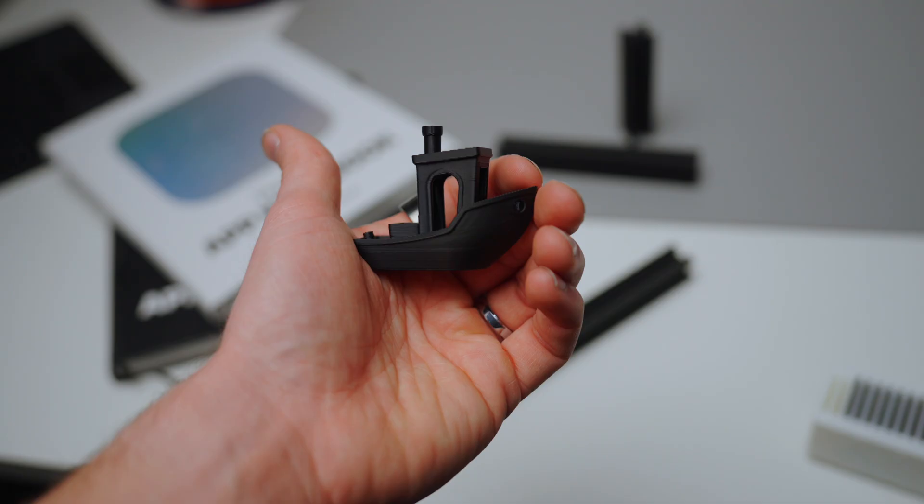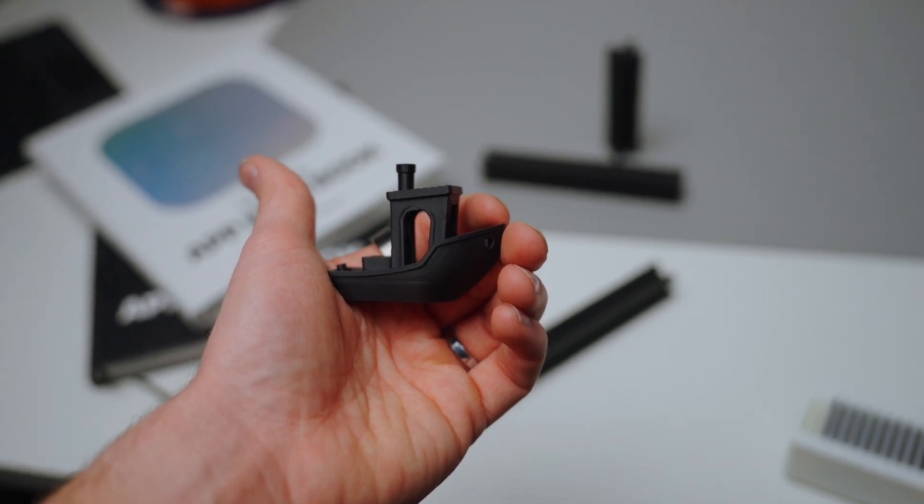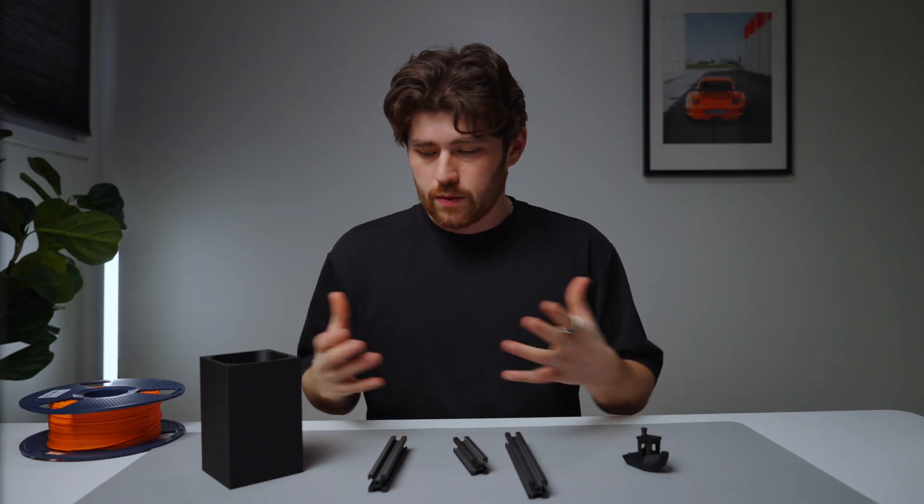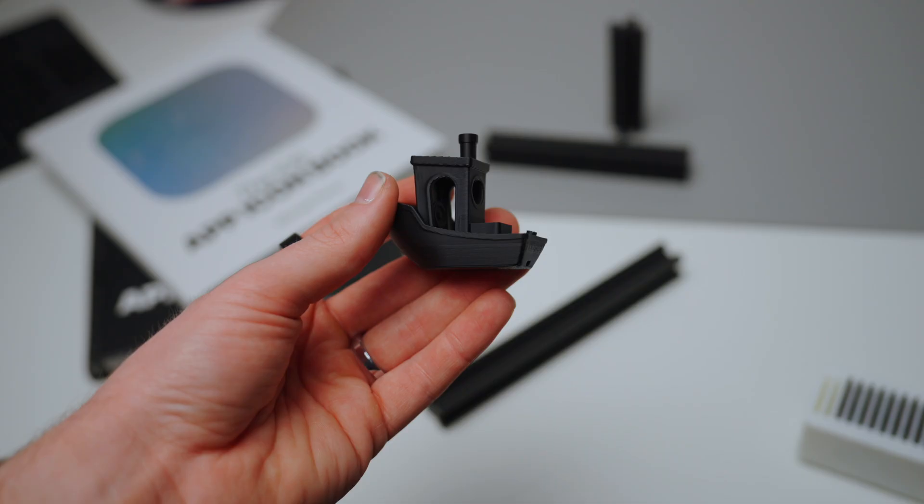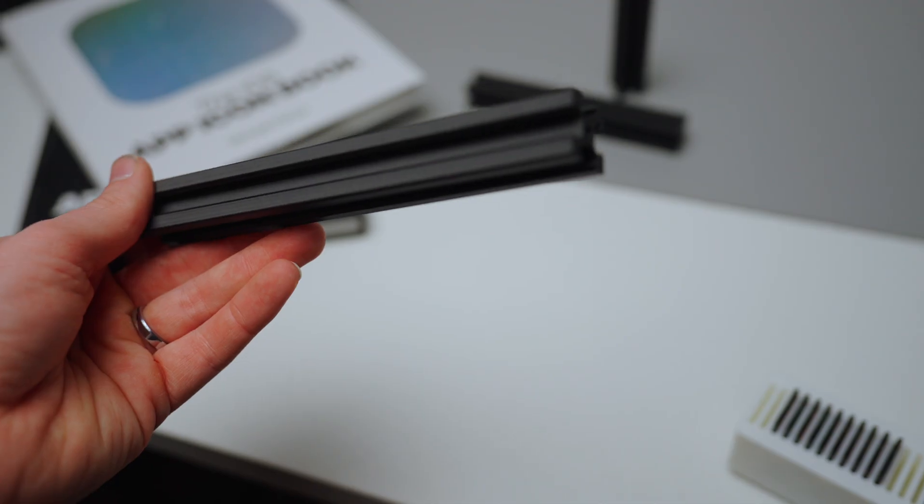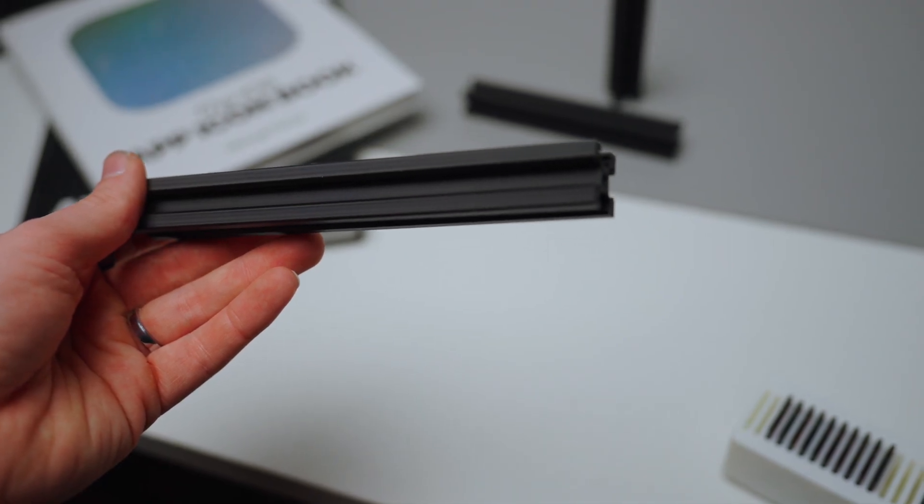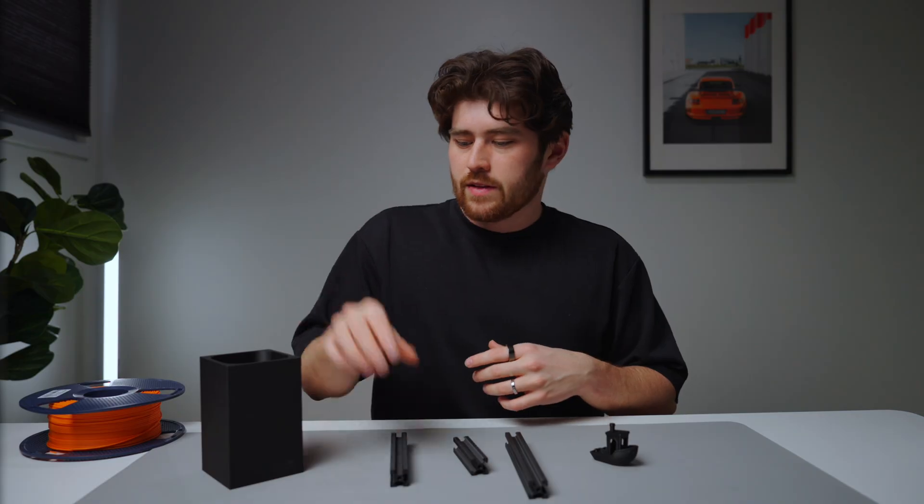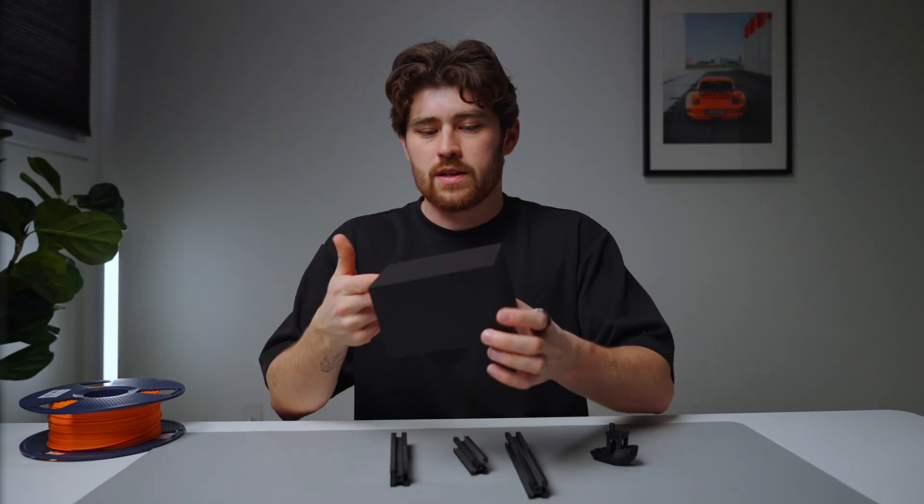And then of course we have our little benchy for benchmarking kind of generic stuff. And out of these three things, obviously they're all kind of different prints. The benchy is going to require the most amount of things going on. The aluminum extruded rails printed vertically. So it's kind of like a testament to the bed slinger. And then this is obviously just the largest print that I did on it.